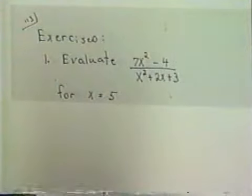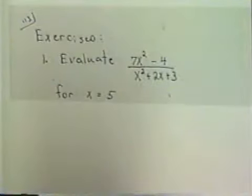Let's look at the first exercise. Evaluate 7x squared minus 4 divided by x squared plus 2x plus 3 for x equal to 5. You need to go ahead and write this problem down and then wait for me to give you the rest of them.